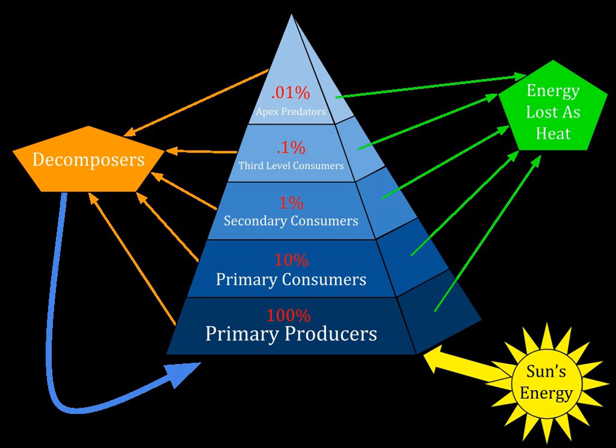An ecological pyramid, also called a trophic pyramid, Eltonian pyramid, or energy pyramid, is a graphical representation designed to show the biomass or bio-productivity at each trophic level in a given ecosystem. Biomass pyramids show how much biomass — the amount of living or organic matter present in an organism — is present at each trophic level, while productivity pyramids show the turnover in biomass.